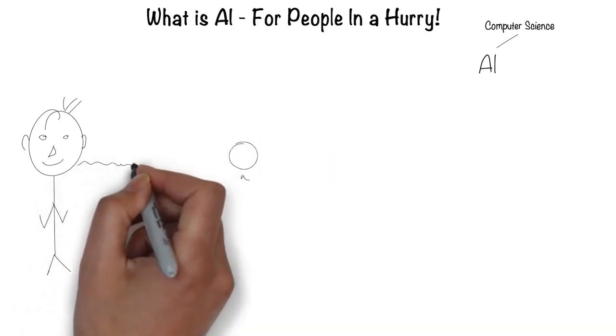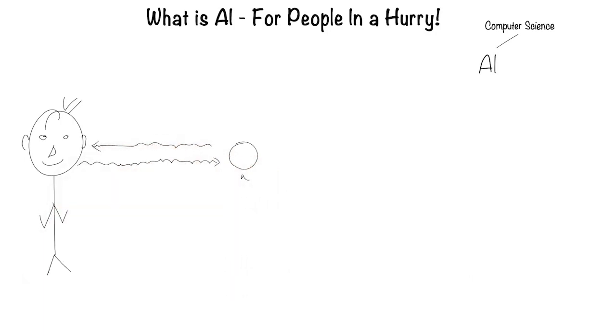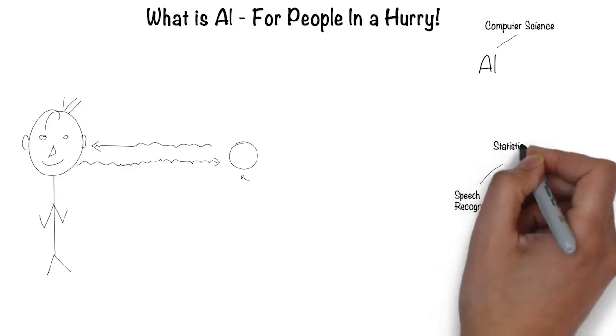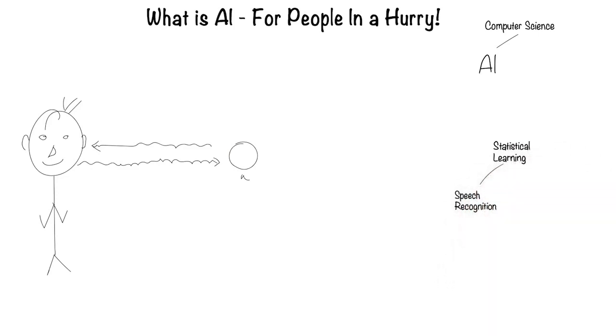Humans can speak and listen to communicate through language. This is the field of speech recognition. Much of speech recognition is statistically based, hence it's called statistical learning.